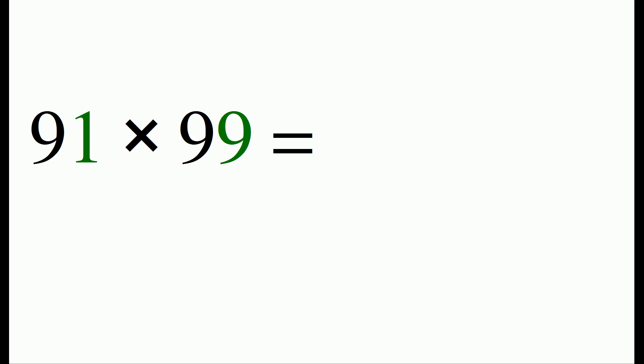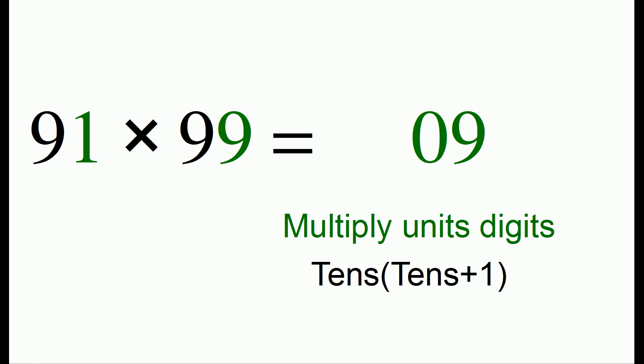If we want to do 91 times 99, we multiply the units digits together and 1 times 9 is 9, but we make a small adjustment and write it as a two digit answer. We then continue and we multiply the tens digit by one more than itself. So 9 times 10 is 90 and that gets us our answer of 9009.